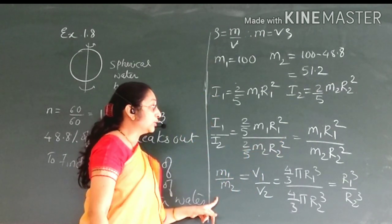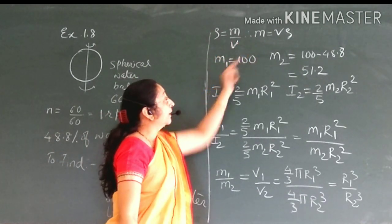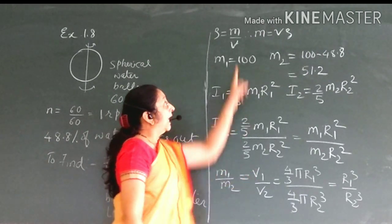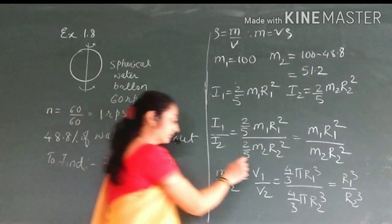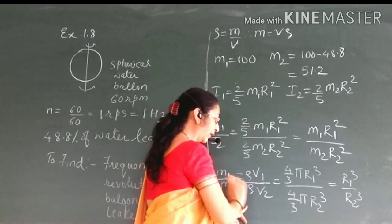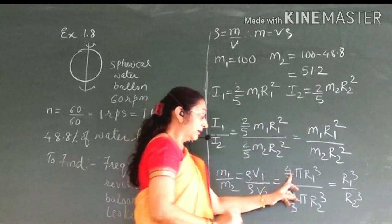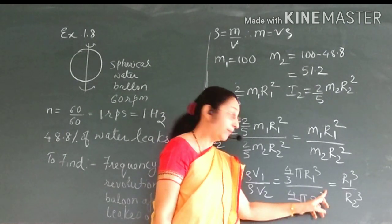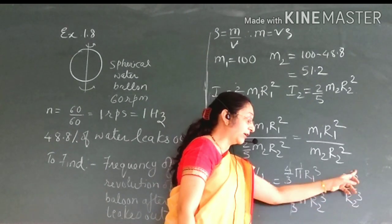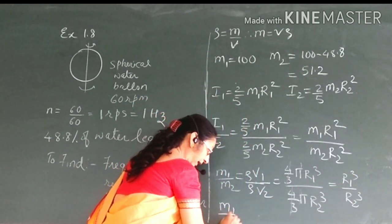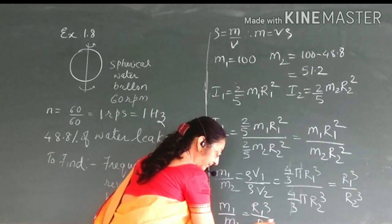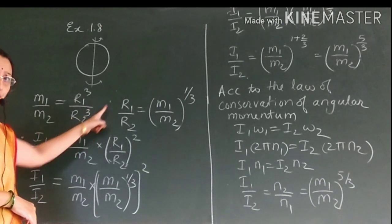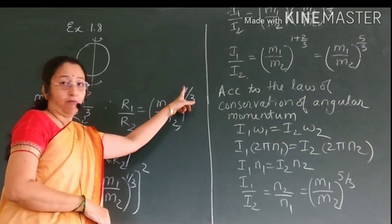We know that density equals mass upon volume, so mass equals density times volume. Therefore m1 upon m2 equals rho v1 upon rho v2, and rho cancels. Writing the volumes as (4/3)π r1³ and (4/3)π r2³, the constants cancel, giving m1 upon m2 equals r1 cubed upon r2 cubed. Therefore r1 upon r2 equals (m1 upon m2) to the power of 1/3.